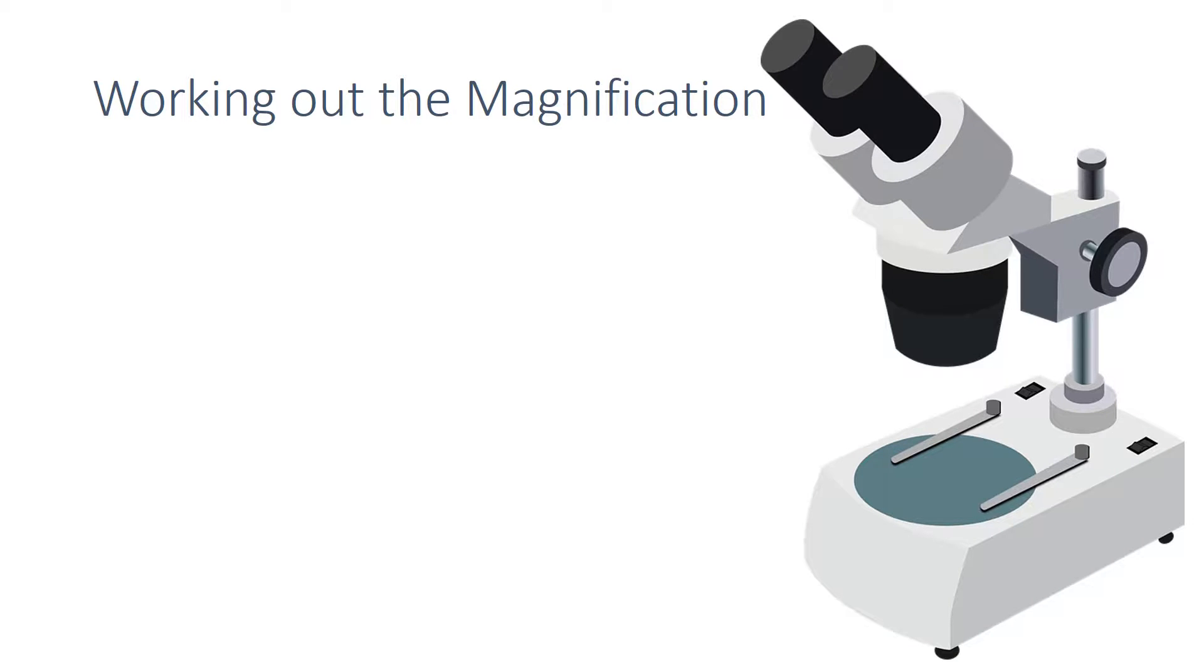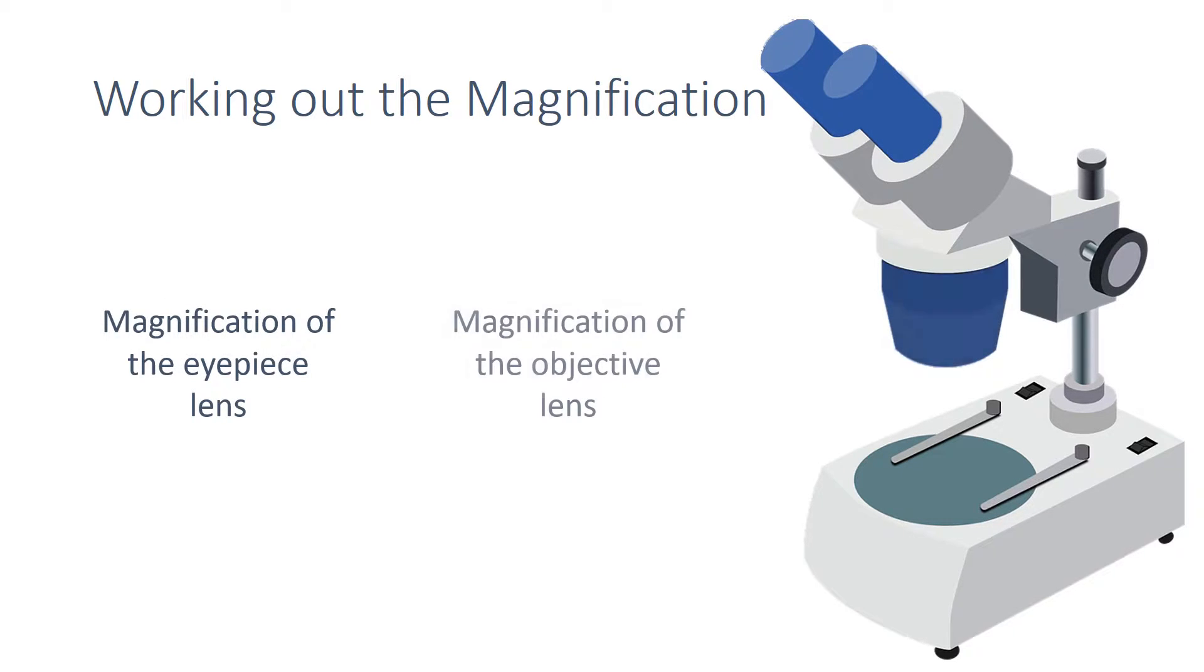When using a microscope, you're observing a specimen through two different lenses: the eyepiece lens and the objective lens. To work out the magnification of the microscope, you need to multiply the magnification of the eyepiece lens by that of the objective lens.